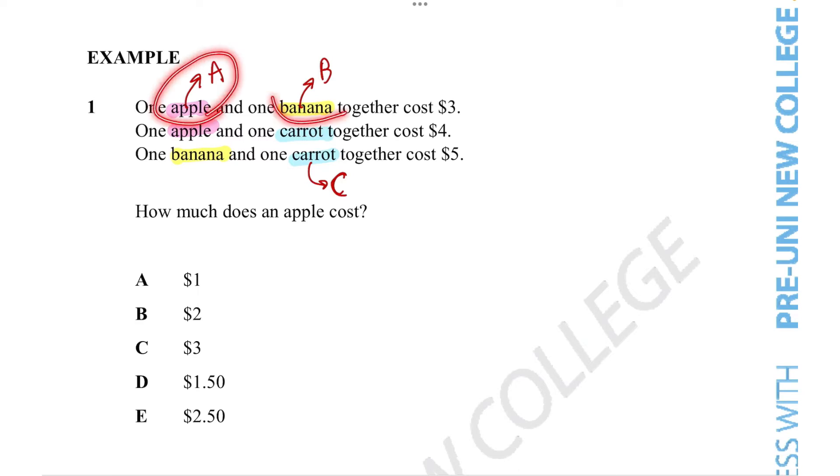Since we're told that one apple and one banana together cost $3, the word together symbolizes addition. So we can convert this first sentence into A + B = $3. In very much the same way, we can represent the other sentences like so.